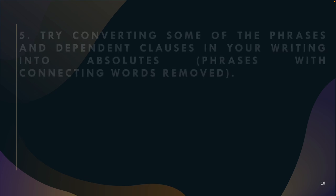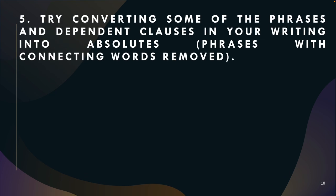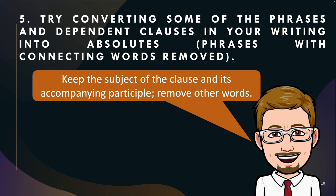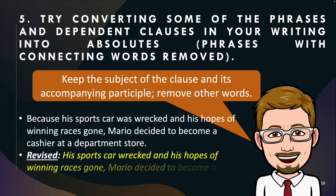Let's take a look at the fifth suggestion: try converting some of the phrases and dependent clauses in your writing into absolutes — phrases with connecting words removed. Keep the subject of the clause and its accompanying participle, and remove other words. Like in our example: 'Because his sports car was wrecked and his hopes of winning races gone, Mary decided to become a cashier at a department store.'